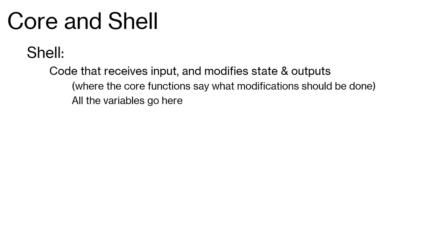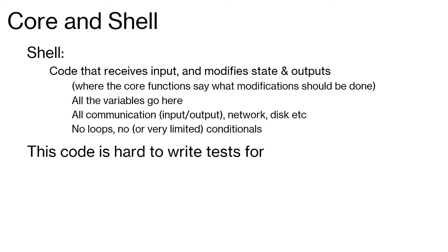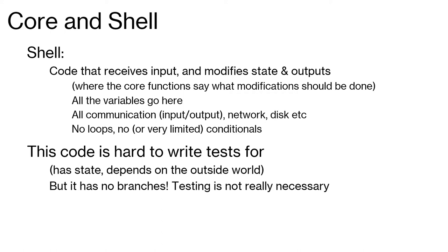In this outer shell all of our variables will go here, all of our communication goes here. The shell can contain the outer big single while loop, but there are no other loops and no other conditionals — or at most one conditional. But this code is hard to write tests for because it interacts with everything else, and if it interacts with everything else you need to test everything else too. However, since there are no loops, no conditionals, no algorithms, no branches, testing this kind of code is hopefully not really necessary because it's all just straight-line code that gets a decision and executes it from top to bottom.